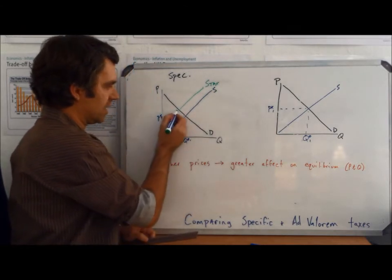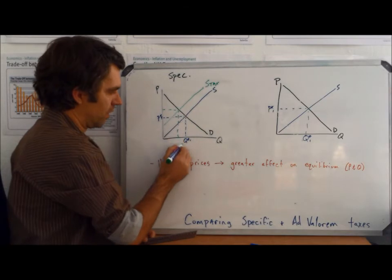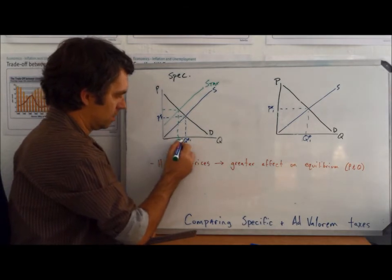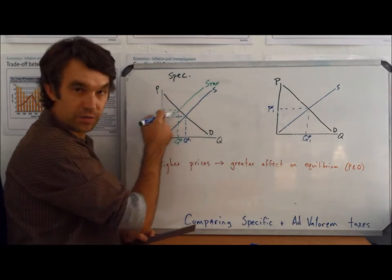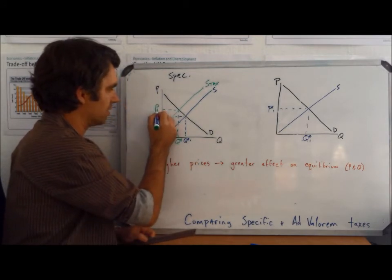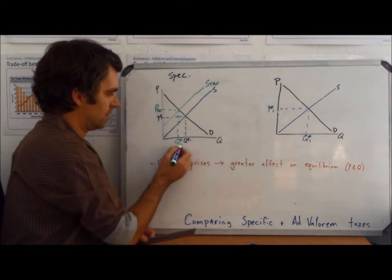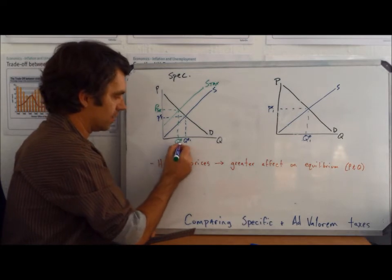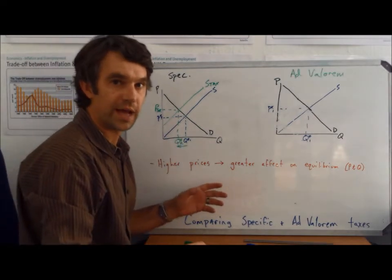What we're going to see is that equilibrium price and quantity are going to move up the demand curve, so the law of demand is going to be in effect, and we're going to see a higher price with tax and a lower quantity with tax.